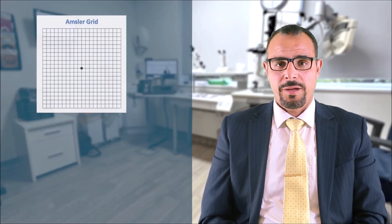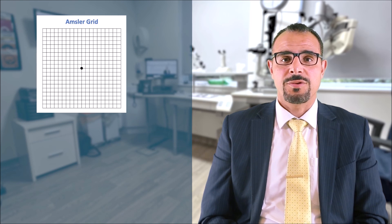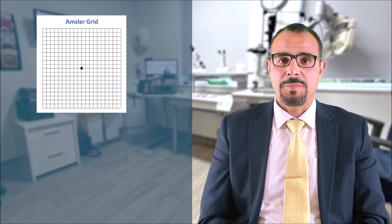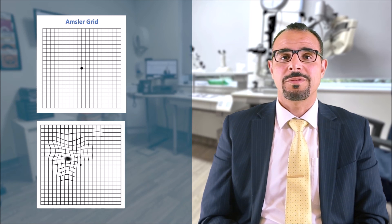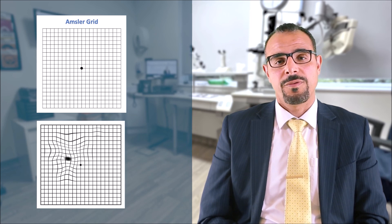Once the diagnosis of epiretinal membrane is made, we recommend all patients to monitor their vision with a grid called the Amsler grid. This is a simple square containing a grid pattern with a small dot in the center, and we often recommend patients to check one eye at a time. Patients with epiretinal membrane may notice the lines appear slightly wavy or distorted, or occasionally blurring in the central part of their vision.